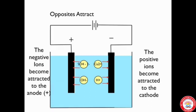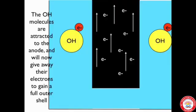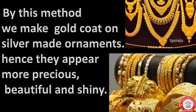The process of depositing a layer of any desired metal on another material by means of electricity is called electroplating. It is one of the most common applications of chemical effects of electric current. So here, copper from one electrode can be deposited on another electrode. By this method we make a gold coat on silver ornaments, hence they appear more precious, beautiful and shiny.